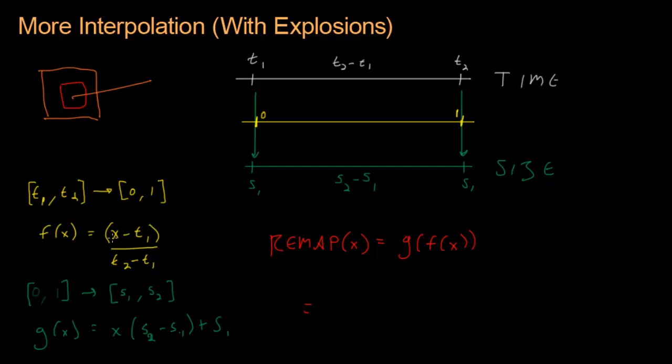So here's an X. I'm going to replace it with this: X minus T1 over T2 minus T1. Then I'm going to multiply that by S2 minus S1, and tack S1 on at the end.